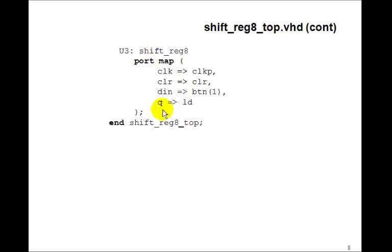And then we have the port map for shift reg 8. The DN is button 01. And the clock P is the clock input. And the Qs will get displayed on the LEDs.